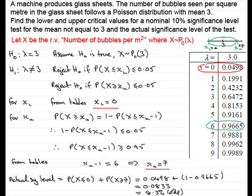You can see that the actual significance level of 8.3% is slightly less than the nominal 10% level. Hopefully you've been able to follow that and can model any other similar examples using this approach.